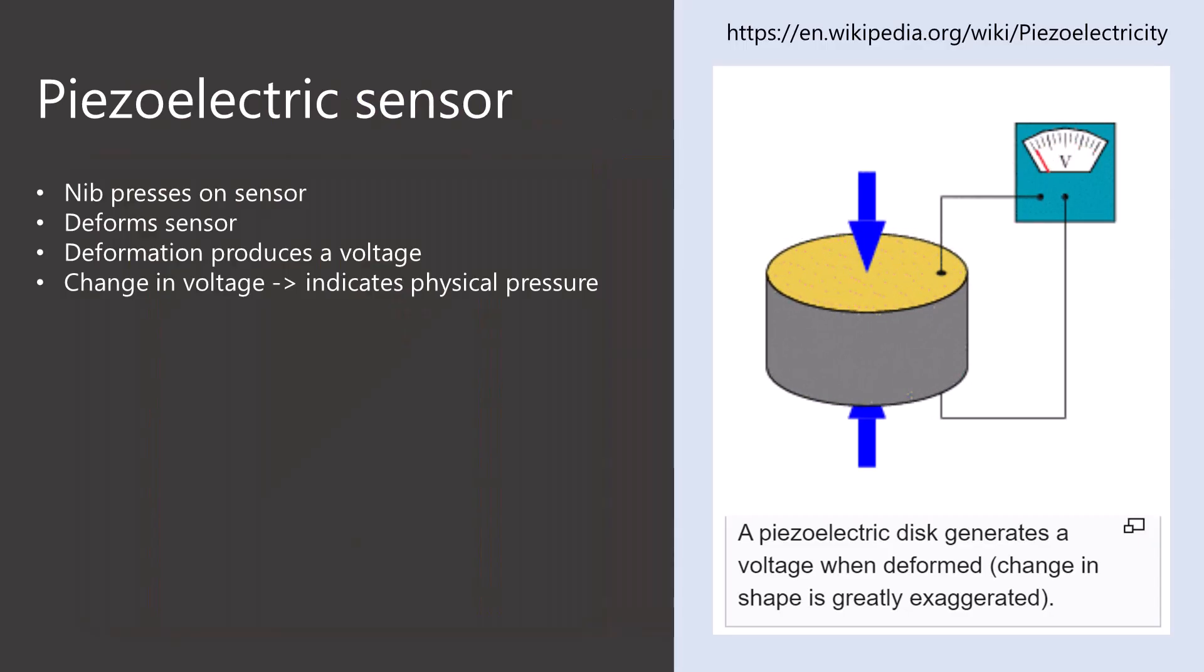Piezo comes from the Greek word, which means pressure or stress. Piezoelectric materials produce a voltage when they are deformed, when there's some stress applied to them. So, in an EMR pen, the nib will cause something to press against the sensor, and that will create a voltage.